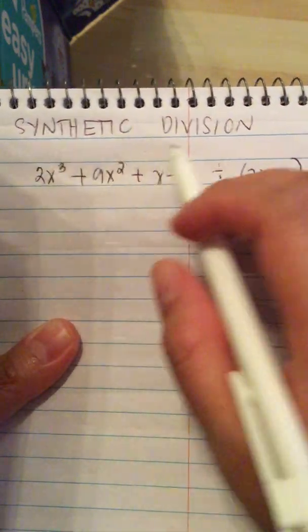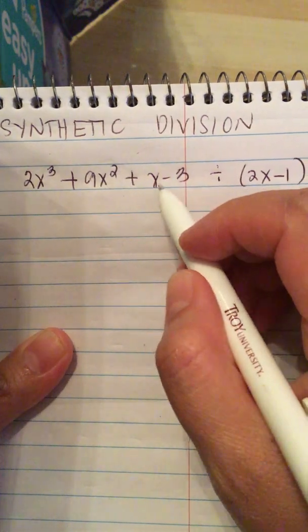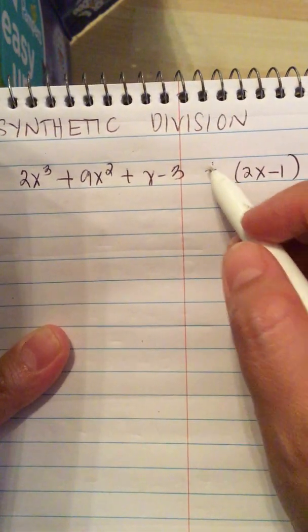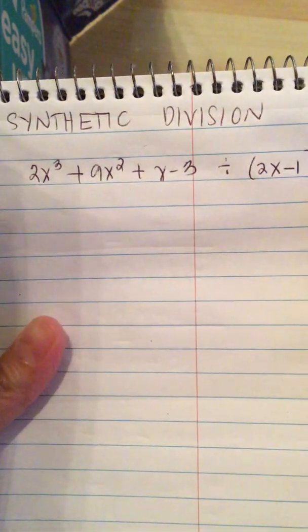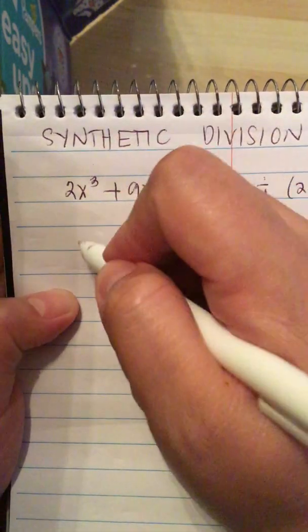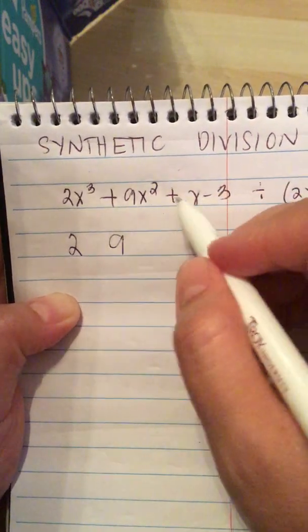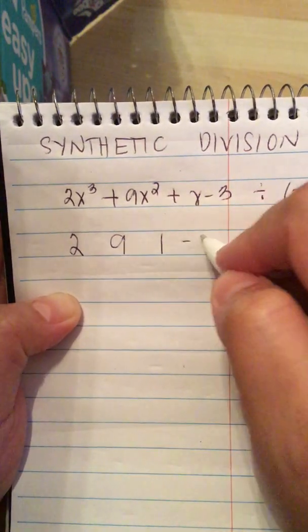So we do more synthetic division. We have 2x cubed plus 9x squared plus x minus 3 divided by 2x minus 1. So we write down the coefficients. So we have 2, 9, 1, and a minus 3.